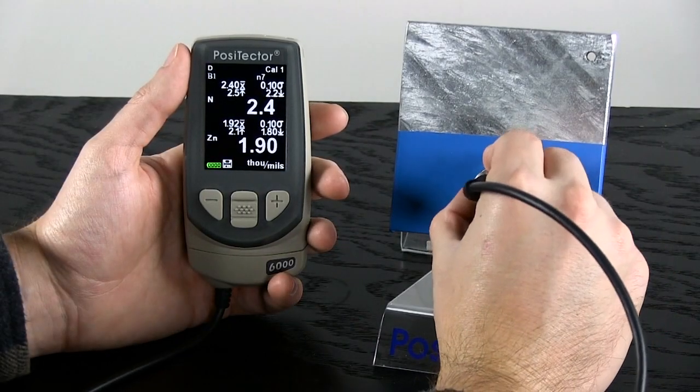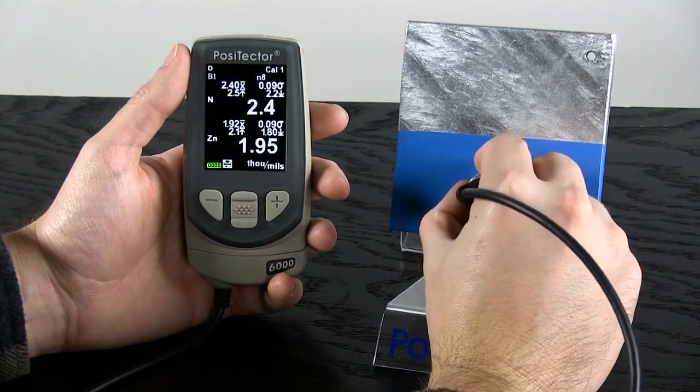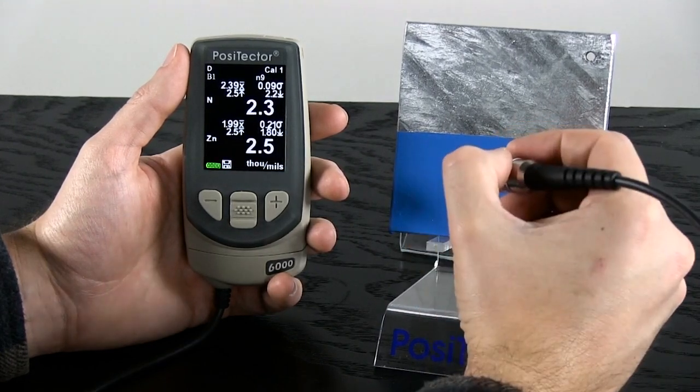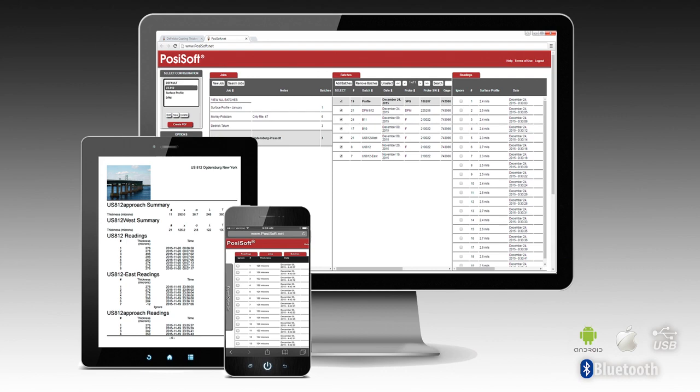With the Positector, an operator can also view statistical summaries of measurements over many surfaces and download results into free reporting software.